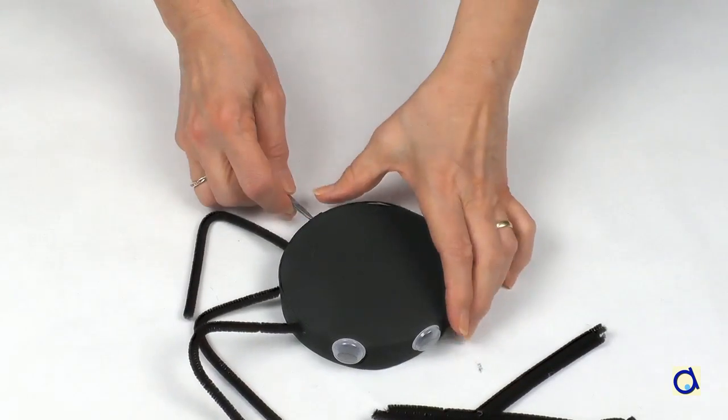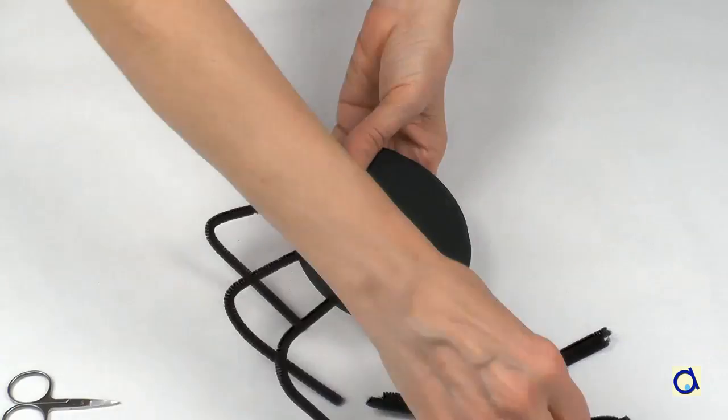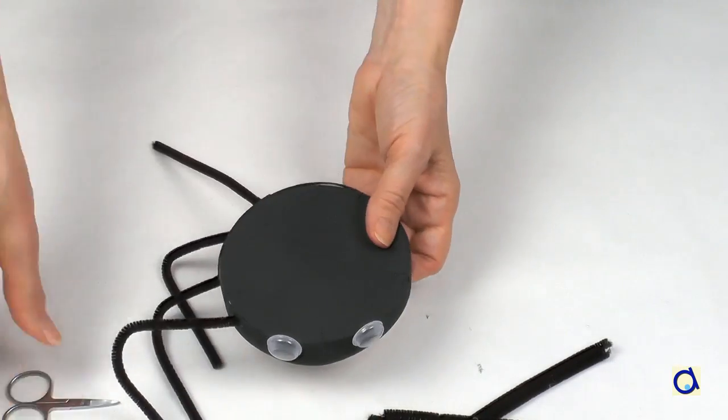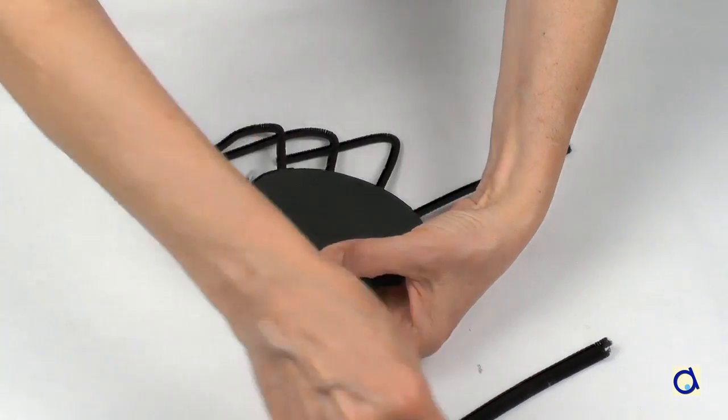Make holes in the side of the box in such a way that you will have four legs spaced evenly on one side of the body and four on the other side. Then, slide the end of each pipe cleaner into one of the holes.